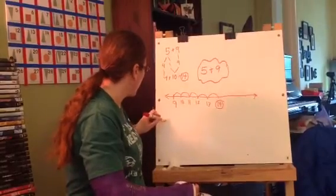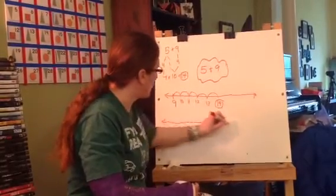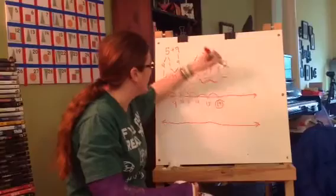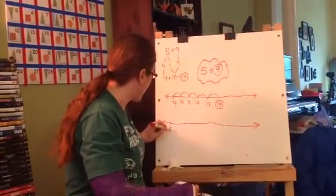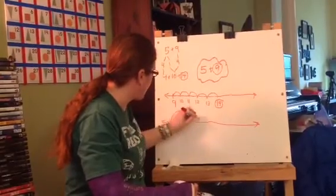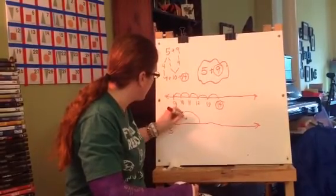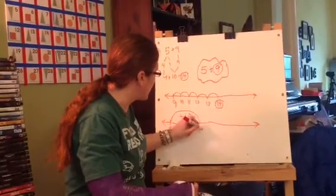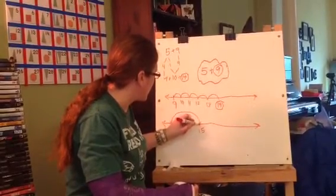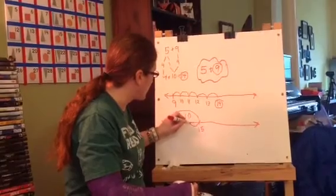Or, I can do that new number line that I showed you on Wednesday because this has a 9 in it. 9 is really close to 10. So, I could start at 5 and I could add a 10. 5 plus 10 would get me to 15. But then I actually need to go back 1 because I was only supposed to add 9. So, that makes my answer 14.